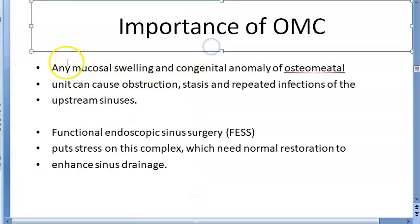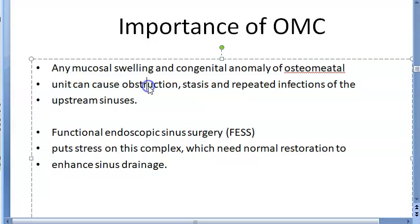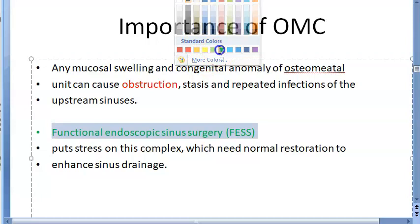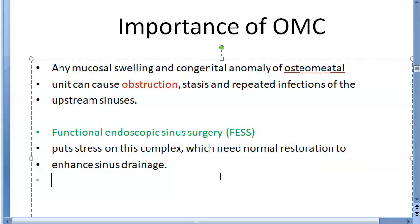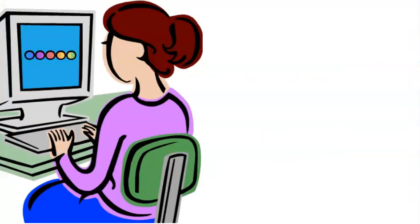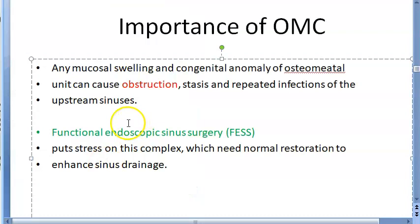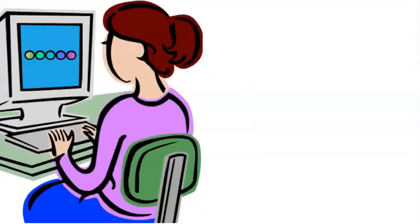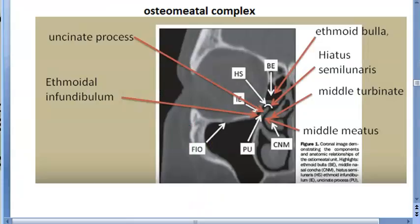The importance of the osteomeatal complex: any mucosal swelling or congenital anomaly of this osteomeatal unit can cause obstruction, stasis, and repeated infections of the upstream sinuses — since all those sinuses cannot drain. Whenever you do FESS, functional endoscopic sinus surgery, you focus on this complex and try to restore the sinus drainage. That is the importance — obstruction leads to repeated infection, and FESS focuses on this unit because it helps in drainage of three sinuses.